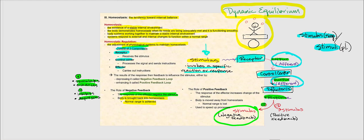We also have what's called positive feedback. With positive feedback — note the plus sign — we add on to the stimulus. We are exaggerating the response and increasing the change of the stimulus. With positive feedback, we are moving away from homeostasis, and normal range is lost.